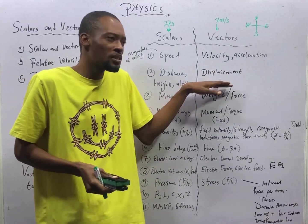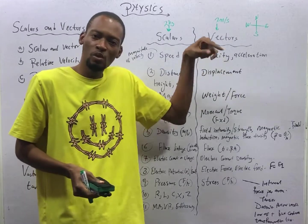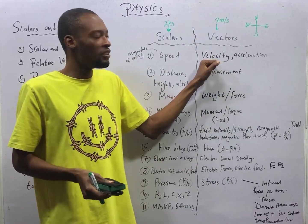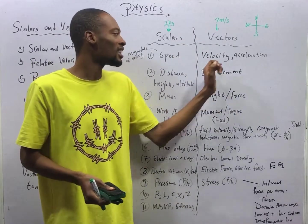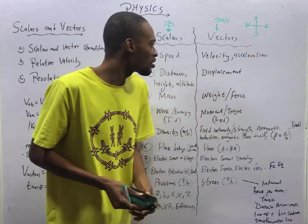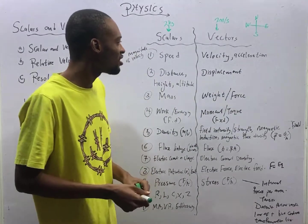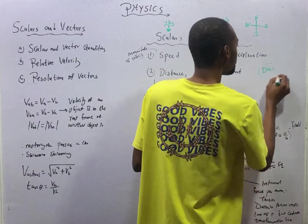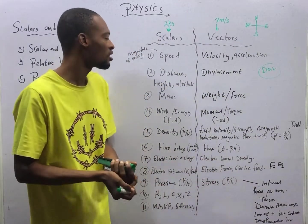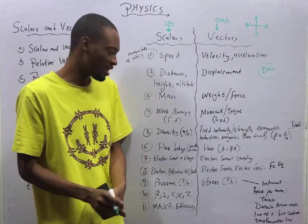And when you differentiate displacement, or displacement with respect to time, you get velocity. And when velocity is changing with time, that becomes acceleration. So velocity, acceleration, which is dv/dt, dv/dt, they are vector quantity. But speed and distance are scalars.